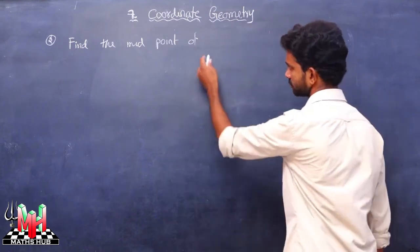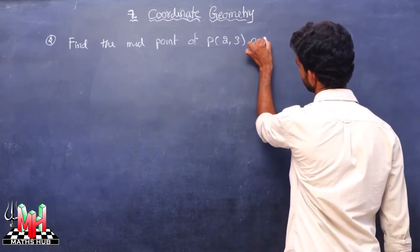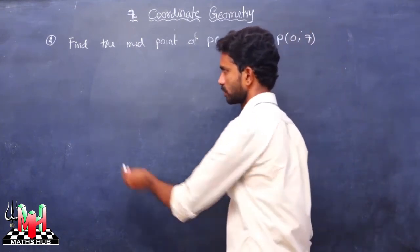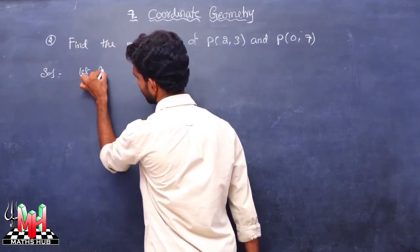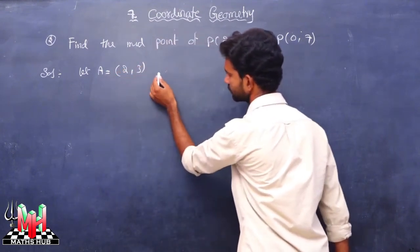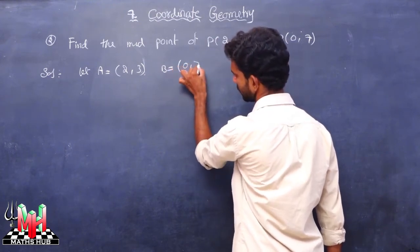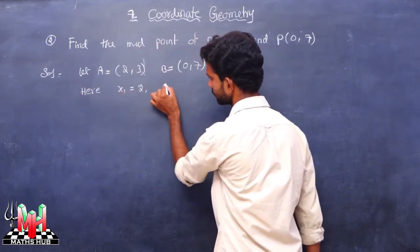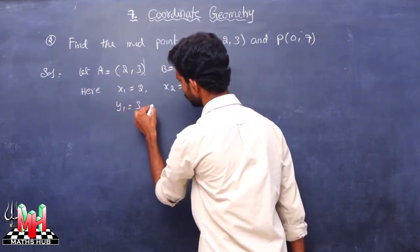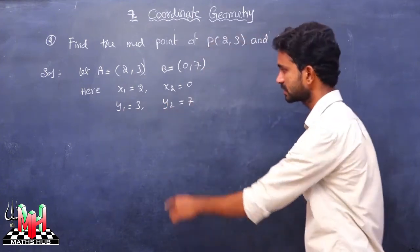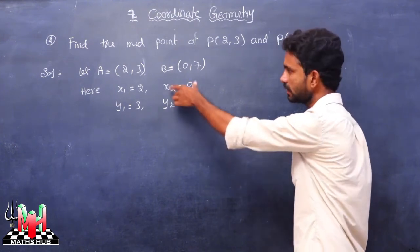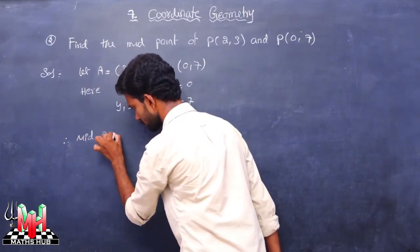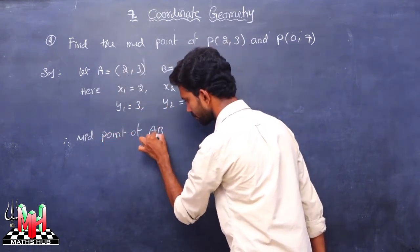Find the midpoint of P of 2 comma 3 and P of 0 comma 7. Solution: let A is equal to 2 comma 3 and B is equal to 0 comma 7. Here x1 is equal to 2, x2 is equal to 0, y1 is equal to 3, y2 is equal to 7.